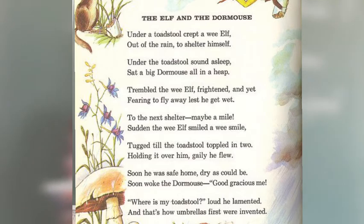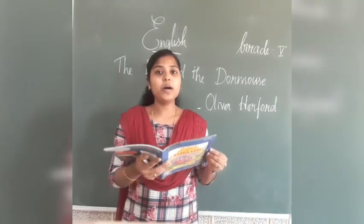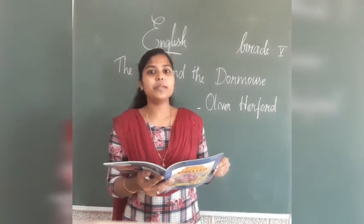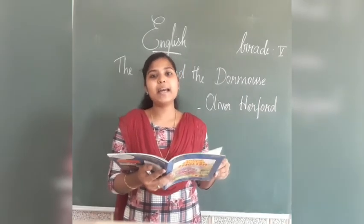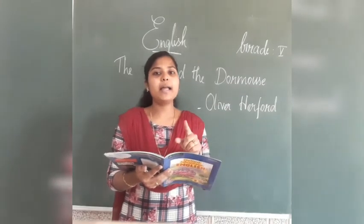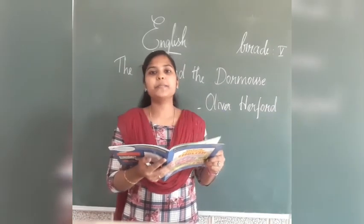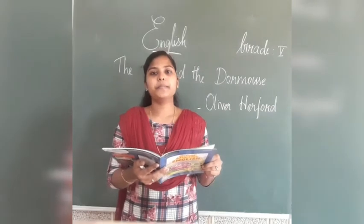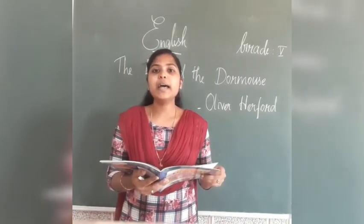This poem is telling us how umbrellas were invented. Who takes away the toadstool? The Elf. And thus umbrellas were invented. Do you all love this poetry? Will you all read it again? Keep a dictionary with you to find the meanings of words you find difficult. Take your pencil, your dictionary, your textbook and start to read this poem. Try to do the textbook exercises on page numbers 14 and 15.